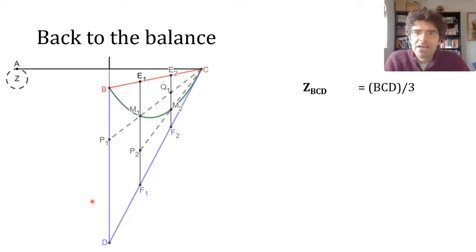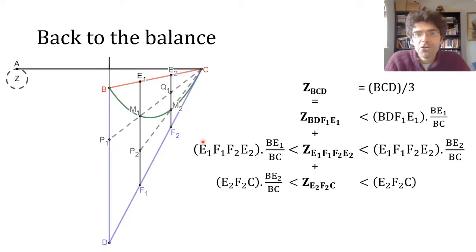And now a parabola is suddenly going to appear. If we take three strips and focus on the middle one as an example, we argued from its centre of mass that its contribution to Z would be somewhere between BE1 over BC and BE2 over BC of the area of the trapezium. And these kinds of ratio are also the ratios at which a parabola will cut a vertical line from a chord to a tangent.